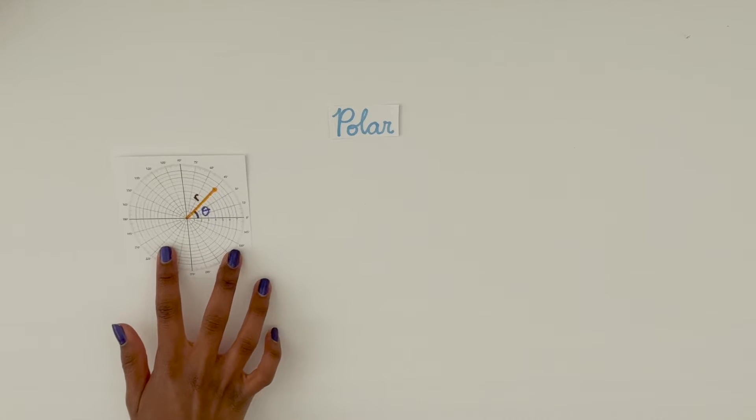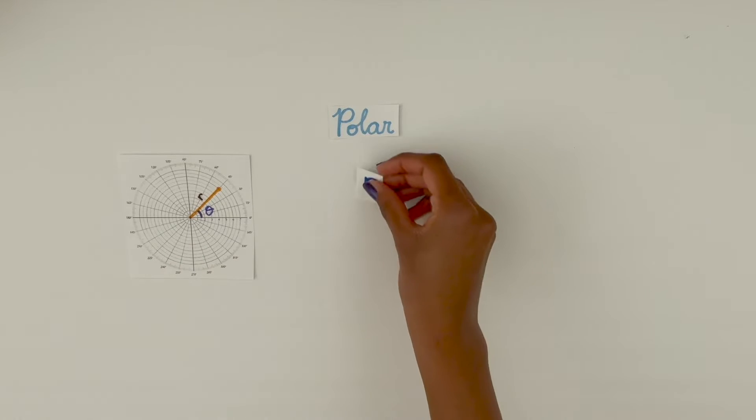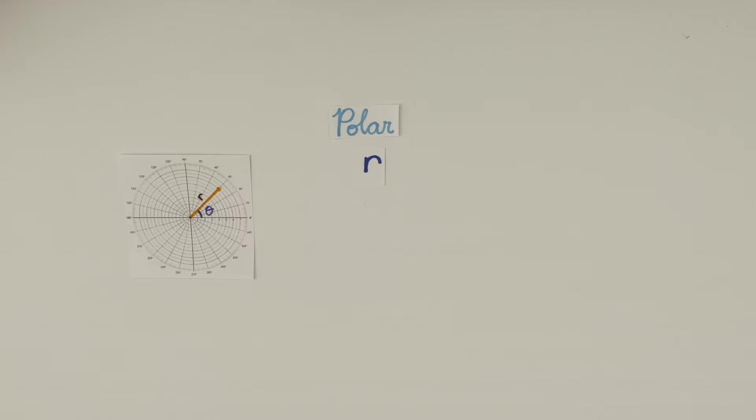What other meaning does the symbol r have in math? Yup, you guessed it, radius. And that is essentially what r represents in a polar graph too.